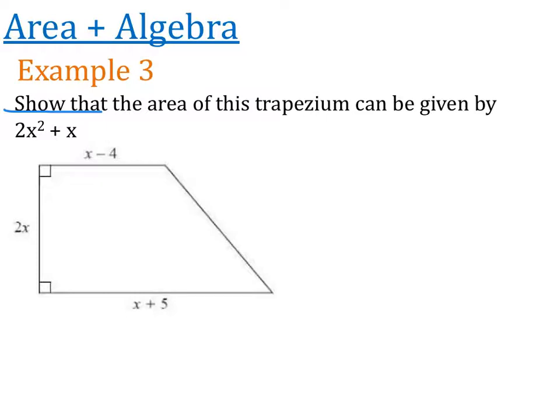So what that's really asking us to do is to find the area of this trapezium and hope that we get the answer of 2x squared plus x. Now hopefully you remember from yesterday that the area of a trapezium is a plus b times by h, and then divide the whole thing by 2.